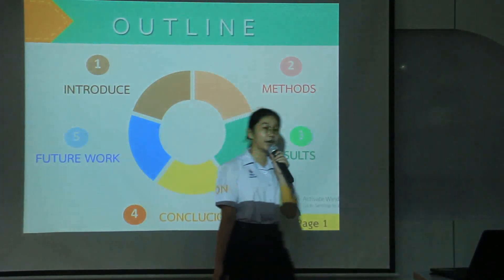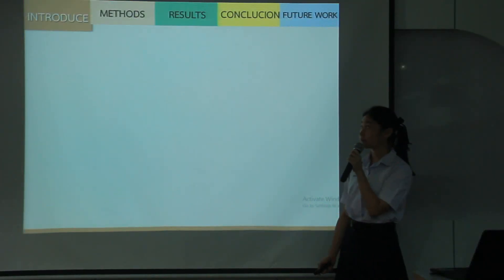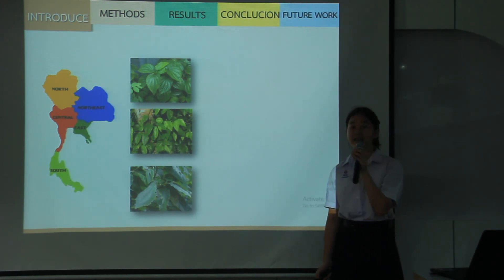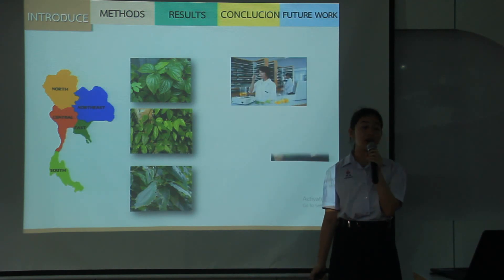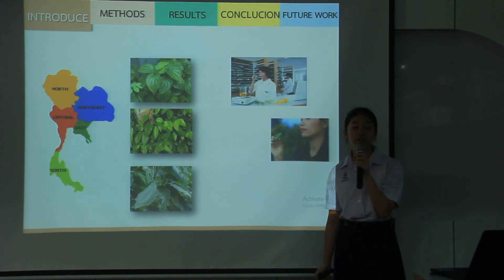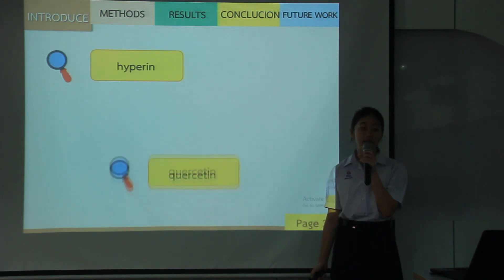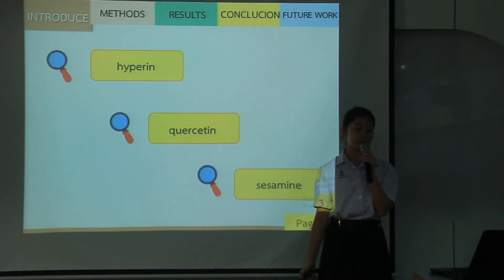This is my outline. Let's start with the introduction. Piper Rockcast is a plant that can be found in many forests in Thailand and it is useful in many ways, such as being an herb for nourishing the body. It contains many substances that can inhibit and sterilize, such as hyperine, concatine, and sesame, which have anti-fungal properties.